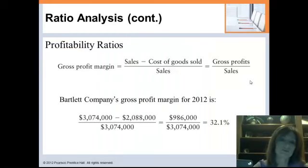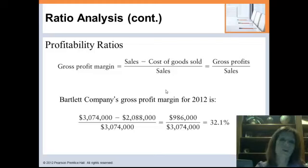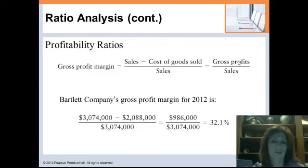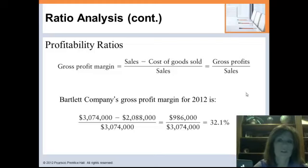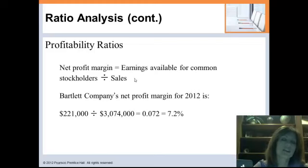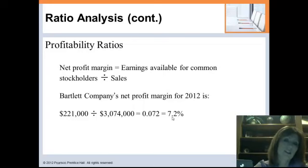Profitability ratios give us an indication of how much money we're making. The gross profit margin takes sales minus cost of goods sold divided by sales — that's how much money we're making before subtracting other operating expenses like administrative salaries. For Bartlett, the gross profit margin is 32%, which sounds pretty good but we don't know until we compare it. The net profit margin is after everything else is subtracted, divided by sales — so Bartlett drops down to 7.2% after all other expenses. Again, could be good or bad depending on the comparison.